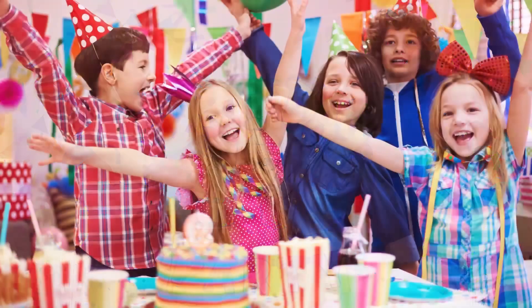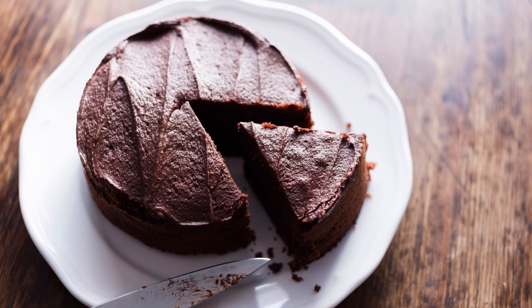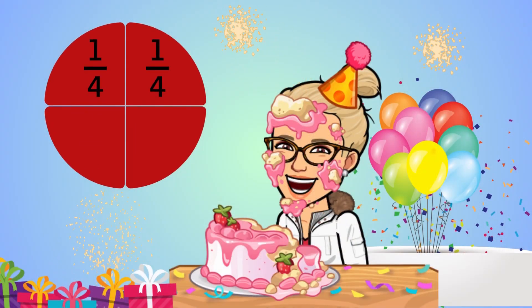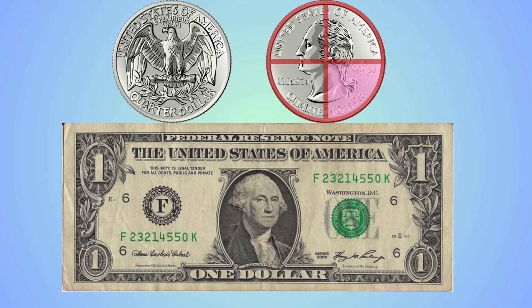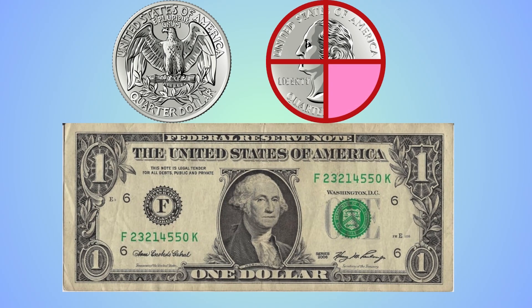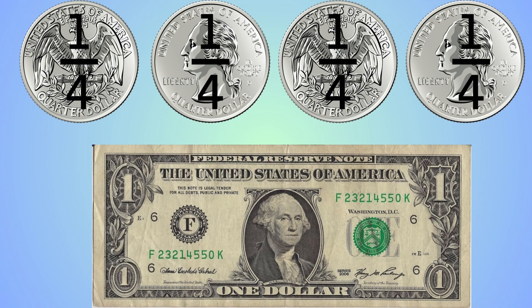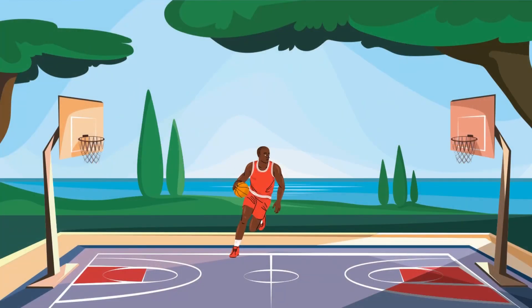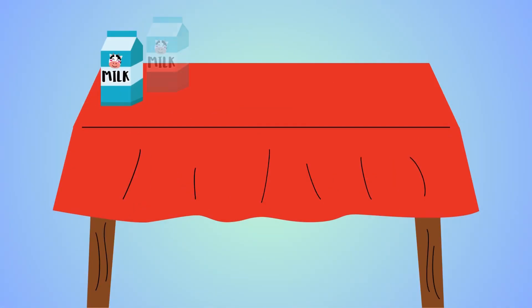Believe it or not, when we celebrate a birthday, we also use fractions, because we use fractions to cut the cake. Let's say we want to share a cake with three friends ourselves, and three friends make four. So we have to cut the cake into four pieces. Each of these pieces is one fourth of the cake, or also known as one quarter — yes, just like the coin! And it makes sense because 25 cents is one fourth of a dollar. Basketball games are also divided into four quarters. A quarter past means 15 minutes after the hour. And four quarters make a gallon.